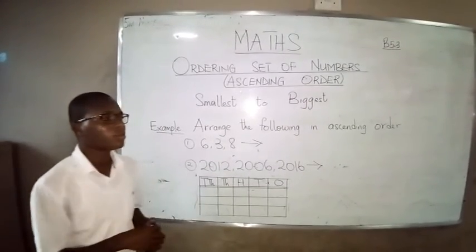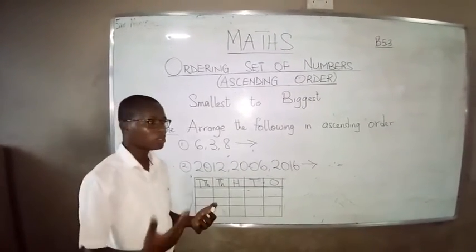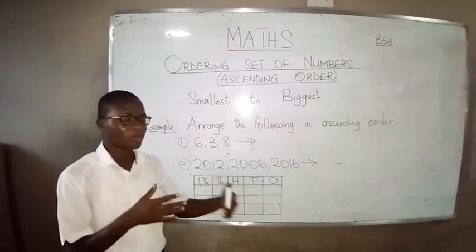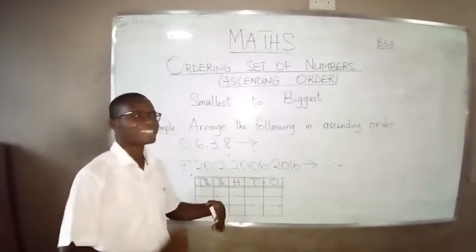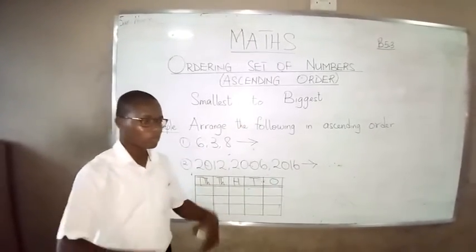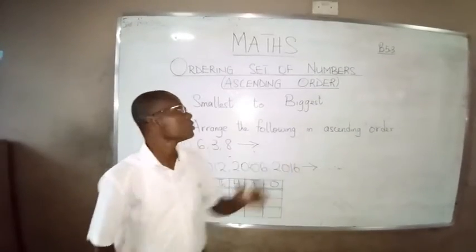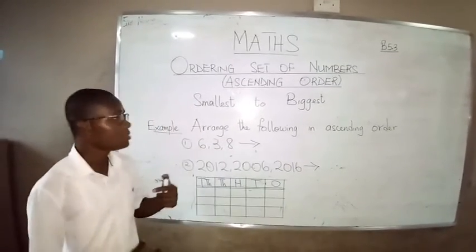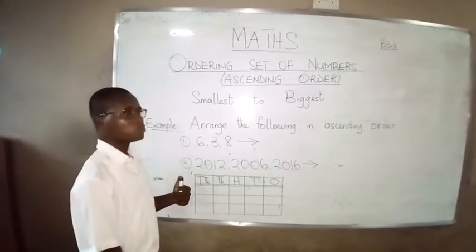Now, those of you who like reading the Bible, you know that there is a part of the Bible that says Jesus ascended. So He was on earth and He went up. So what ascending means is going from down to the top.